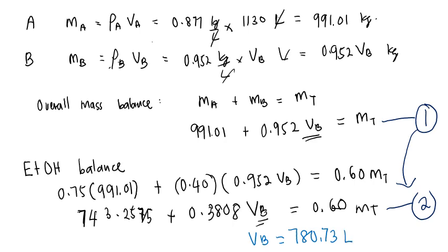Giving the answer to three significant figures: 781 litres of mixture B to be mixed so that you get the final blended mixture with 60 weight percent ethanol.